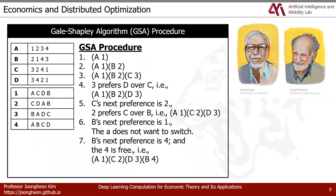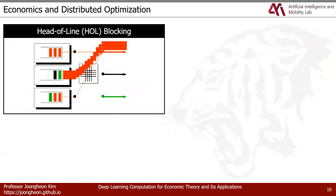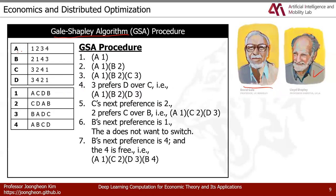The stable marriage mechanism was developed by Gale and Shapley — famous game theory economists. Shapley received the Nobel Prize in economics and many computer science theory awards. This is called the Gale-Shapley Algorithm (GSA), a procedure to reach stable matching quickly. Suppose we have four players with their own preference lists, and we want to find a stable pairing.